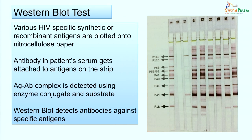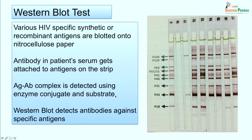Tests that are positive by rapid or simple assays are confirmed using supplemental assays. The most commonly used supplemental test is the Western blot. In Western blot, various HIV-specific synthetic or recombinant antigens are blotted onto a nitrocellulose paper, then reacted with patient serum. The antigen-antibody complexes formed are detected by an enzyme-substrate system similar to ELISA, confirming the result.